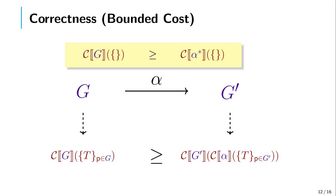We have a number of theoretical and practical results about CAMP. The theoretical ones relate to correctness: we extend the asynchronous semantics for global types with actions that describe the execution times, and we prove that the cost of the global type is always an upper bound of the cost of any possible trace from the protocol.